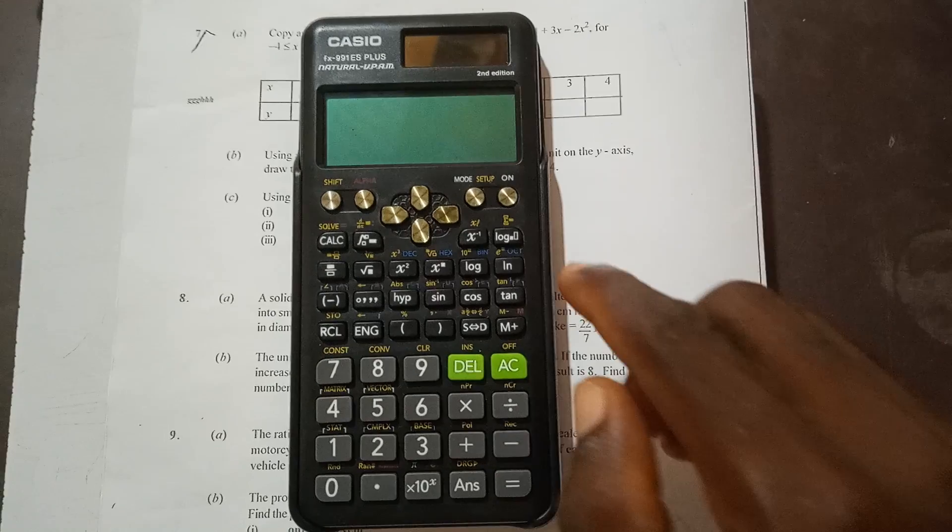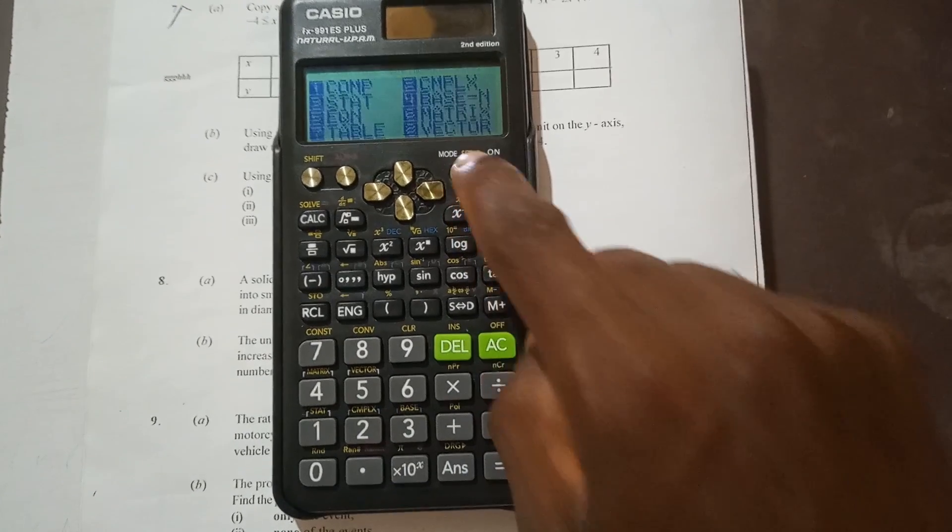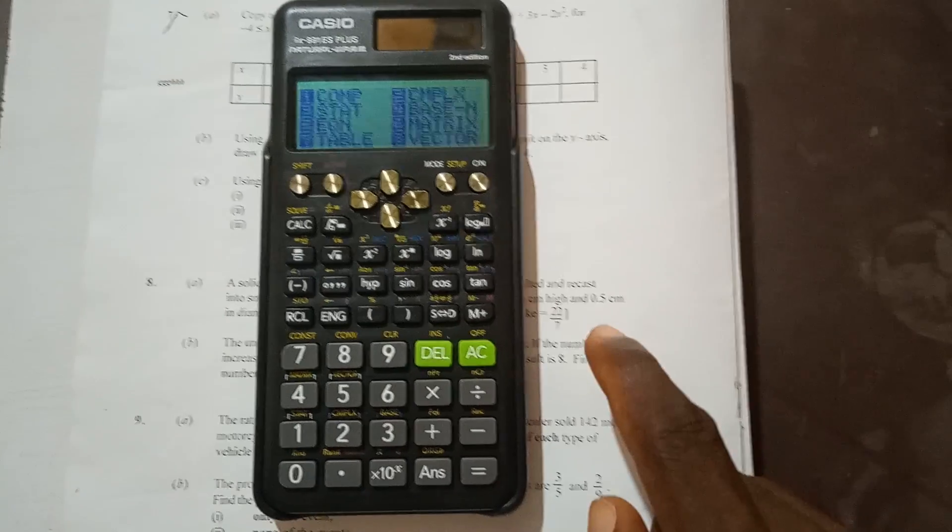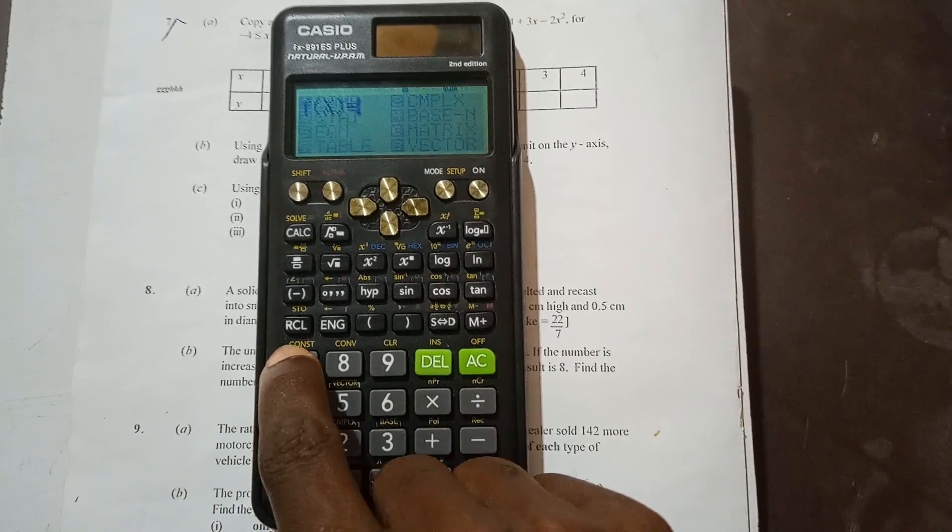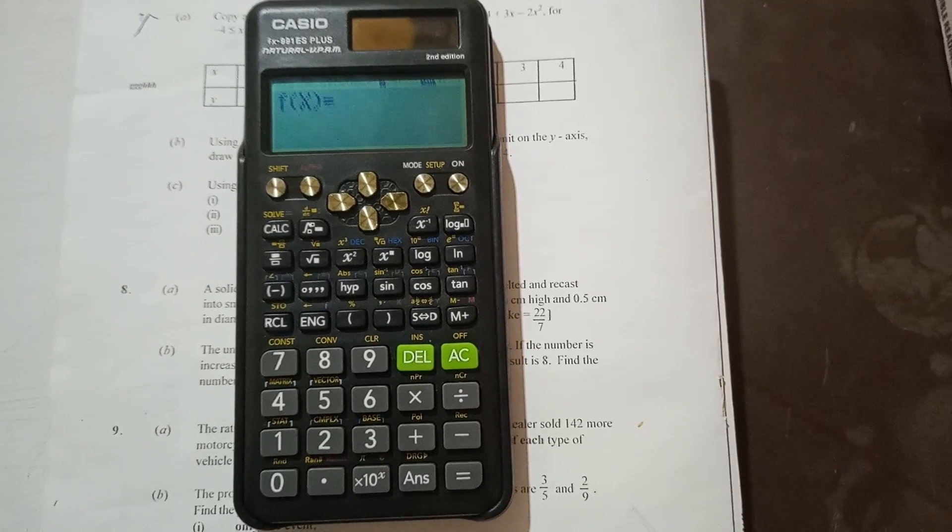We have to first turn on our calculator. Then we go to mode. We look for table. Table is number 7, so you press 7 on your key. Then you see that the function is already there: f of x equals 2.